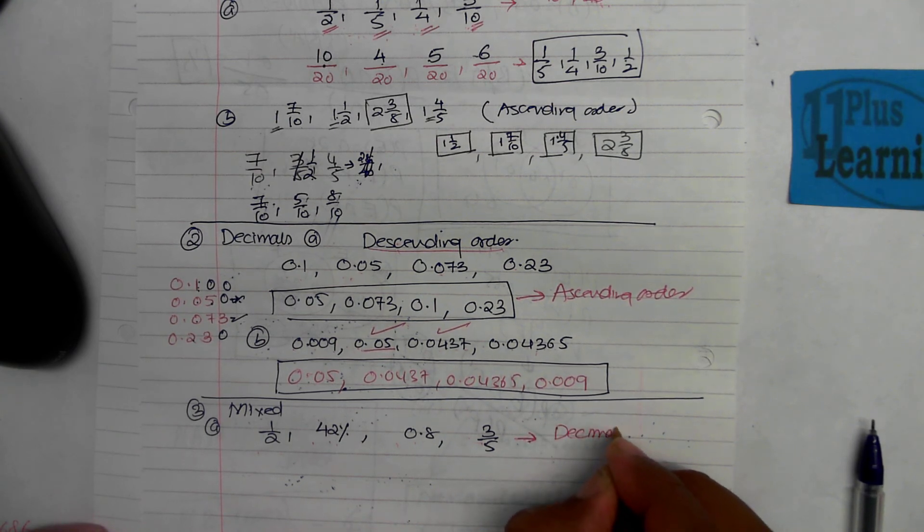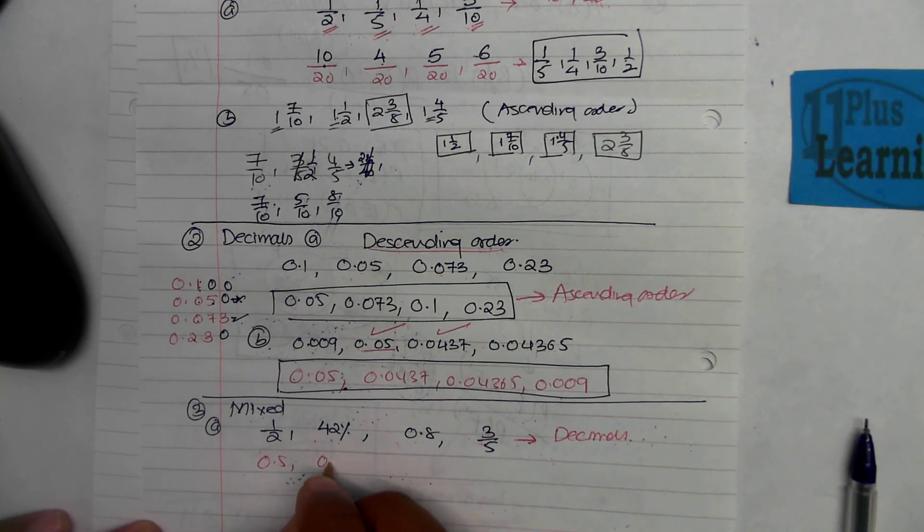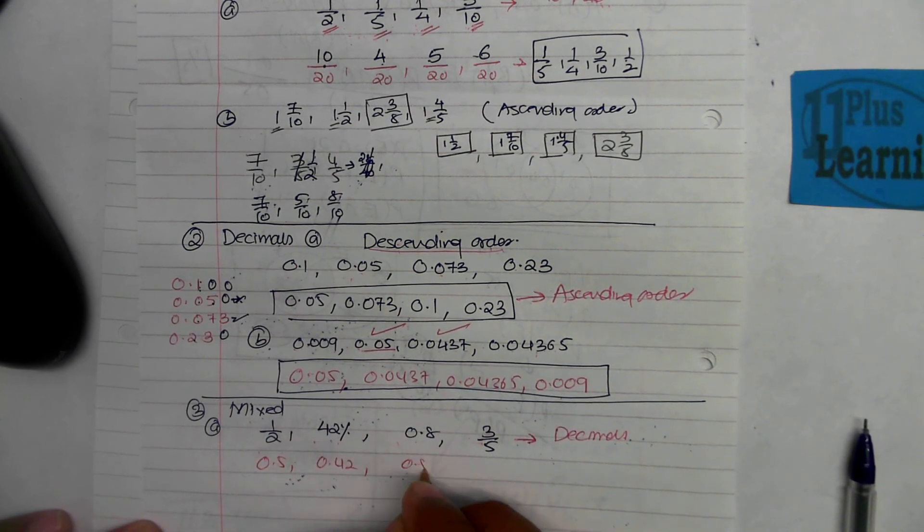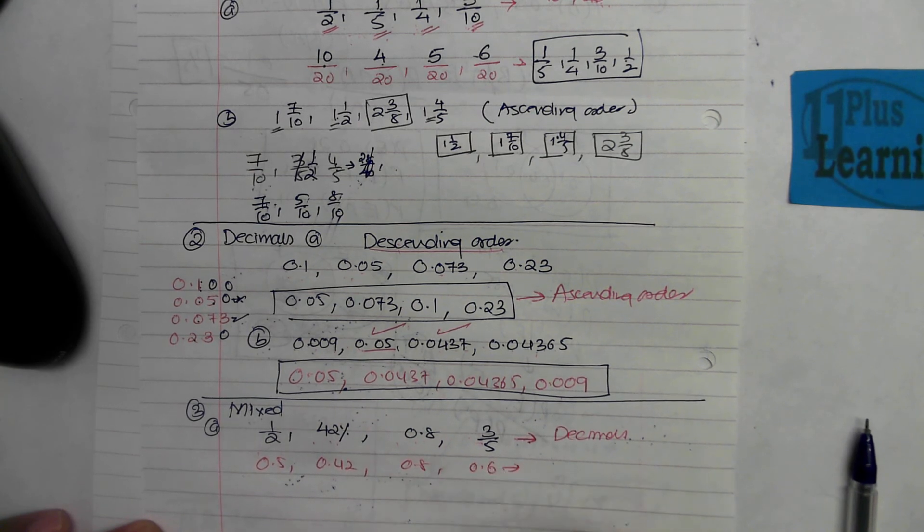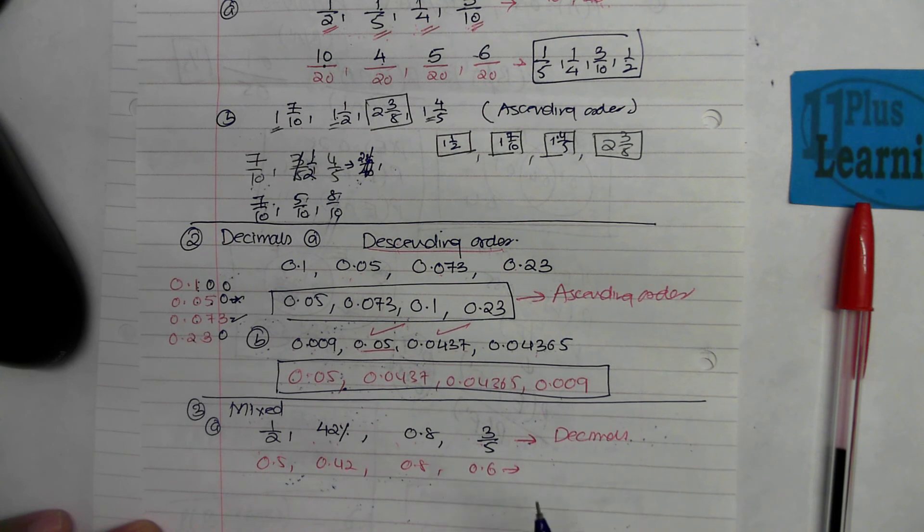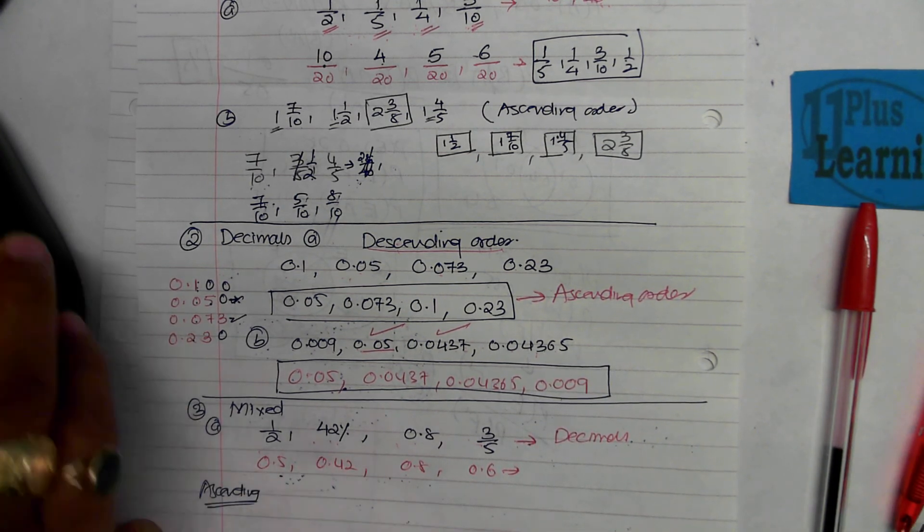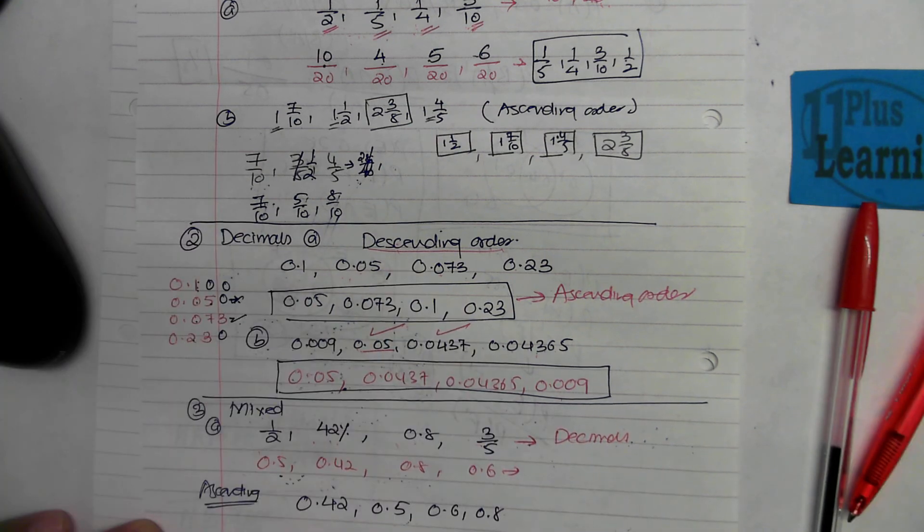Let's change all of them into decimals. You've seen these videos before. This should be 0.5, 0.42, 0.8, and 0.6. If you do not know how we change fractions to decimals, check my previous videos. You divide one by two, divide three by five. Once you've got that, write them in ascending order this time. Work it out and check your answer with mine.